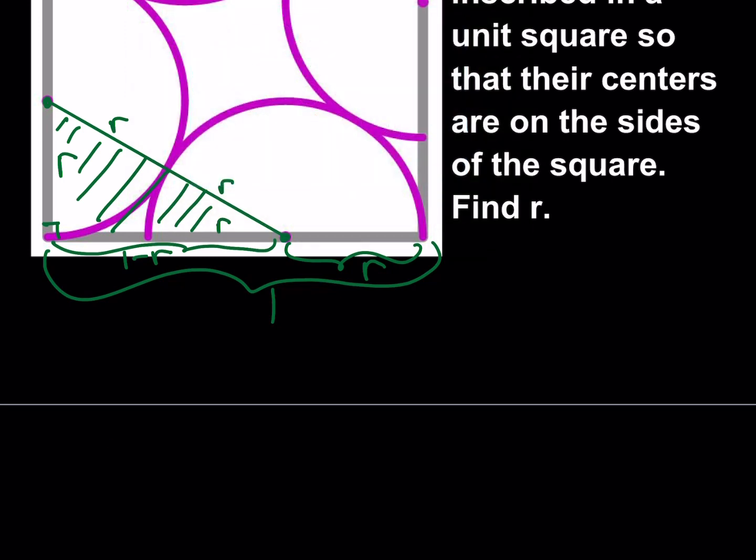Well the first method is r squared plus (1 minus r) squared is equal to (2r) quantity squared. So I'm basically using the Pythagorean theorem without really making any assumptions about this triangle or using any special kind of rules. I'm just using the Pythagorean theorem.